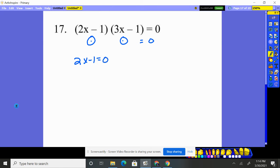So either the 2x minus 1 is 0, or the other possibility is 3x minus 1 is 0. We just have to solve these now.